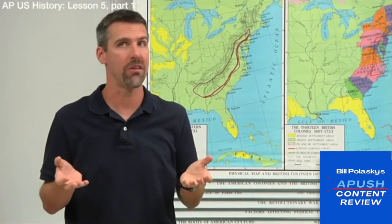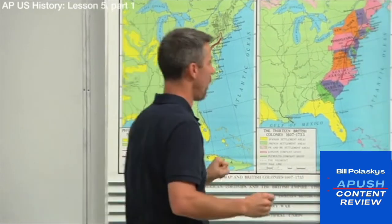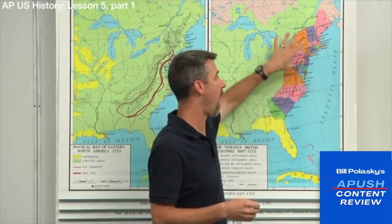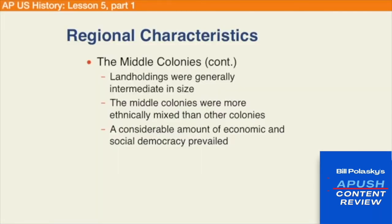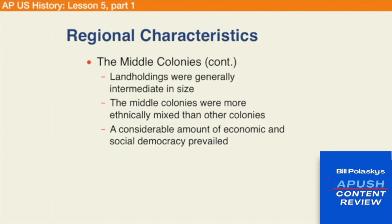Having a farm is not extractive — you literally put down roots. But the fur trade, lumbering, and logging were extractive activities: you take what's here, remove it, and bring it back, rather than setting up a permanent community. Land holdings in the middle colonies were also intermediate — not as small as the New England family farm, but not the massive holdings of the First Families of Virginia. The middle colonies were more ethnically mixed, with New York and Pennsylvania having the most open immigration policies, creating large, diverse communities with a high degree of economic and social democracy, and a greater orientation toward free market capitalism.